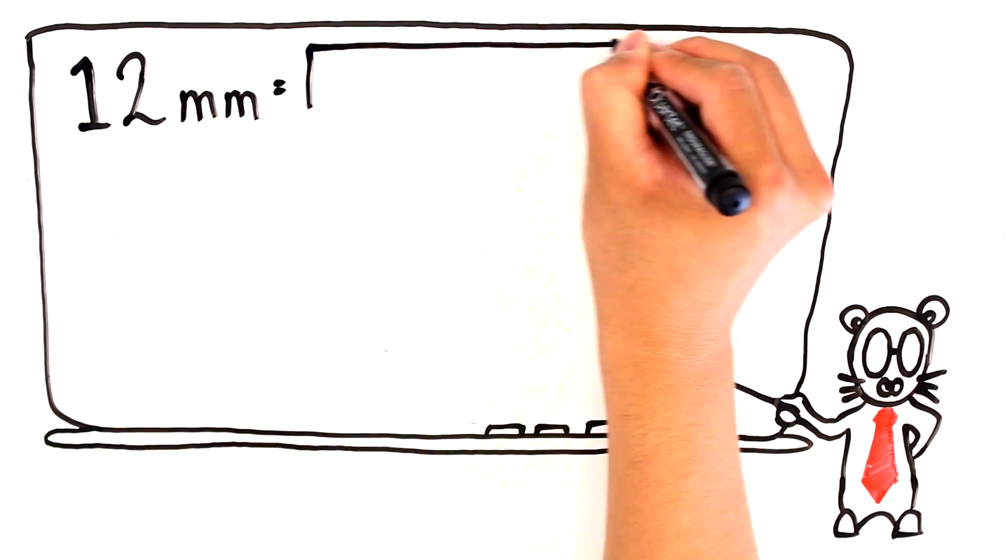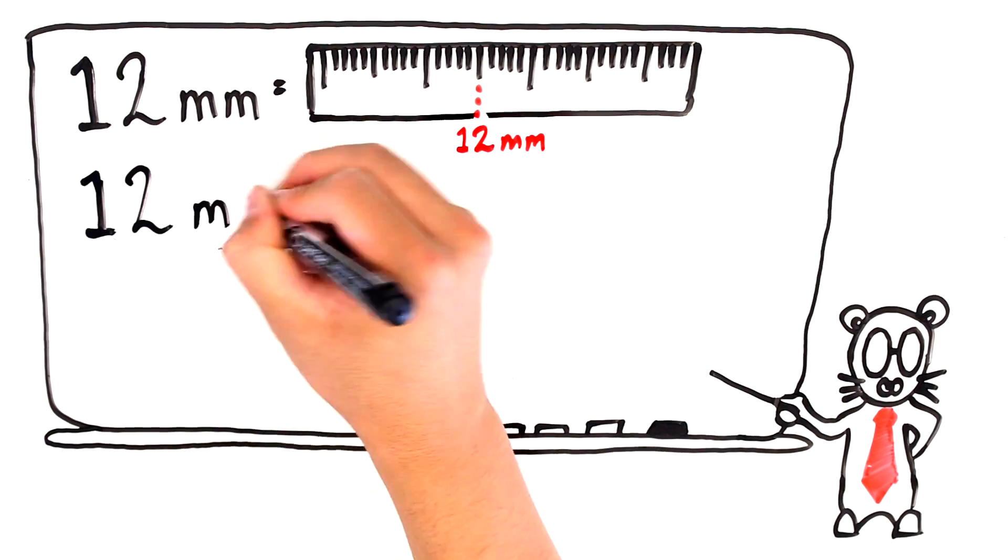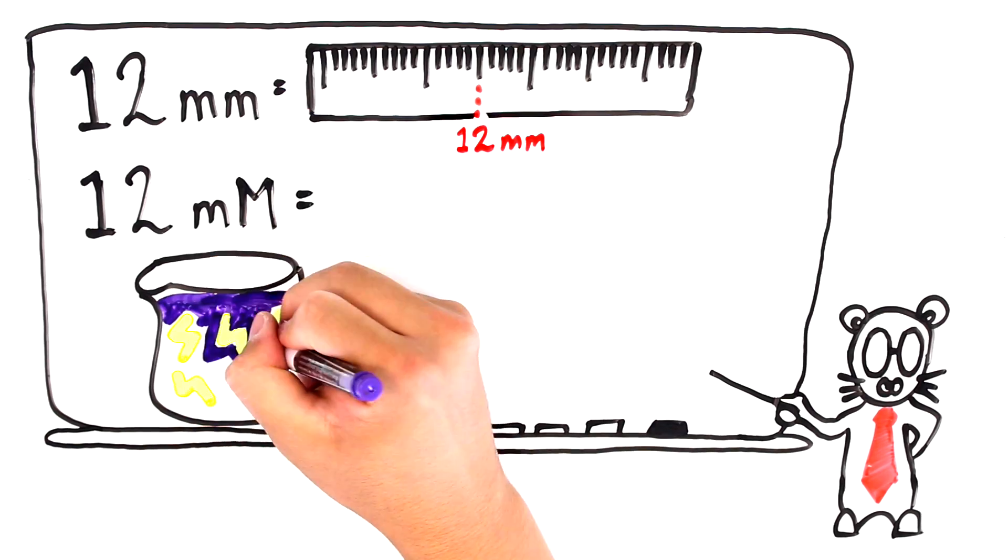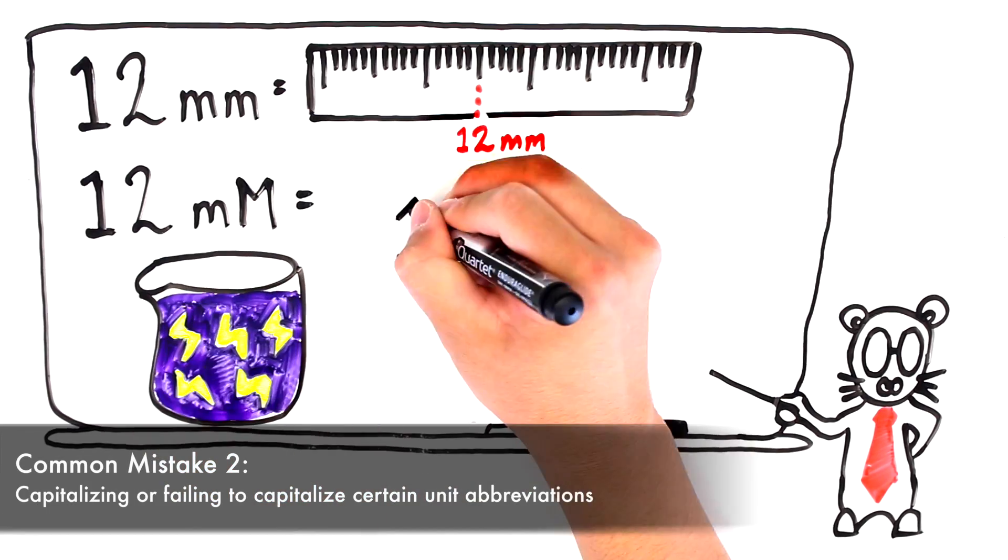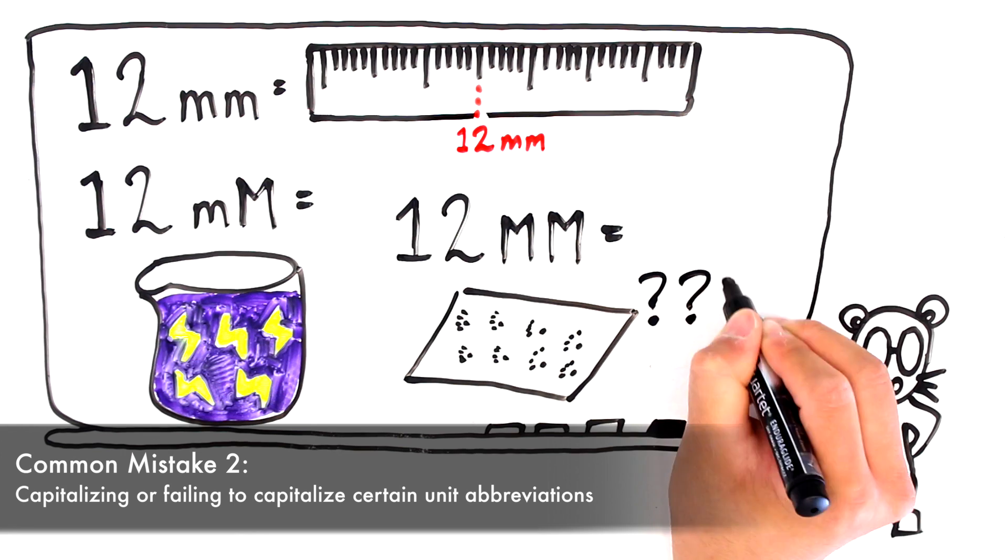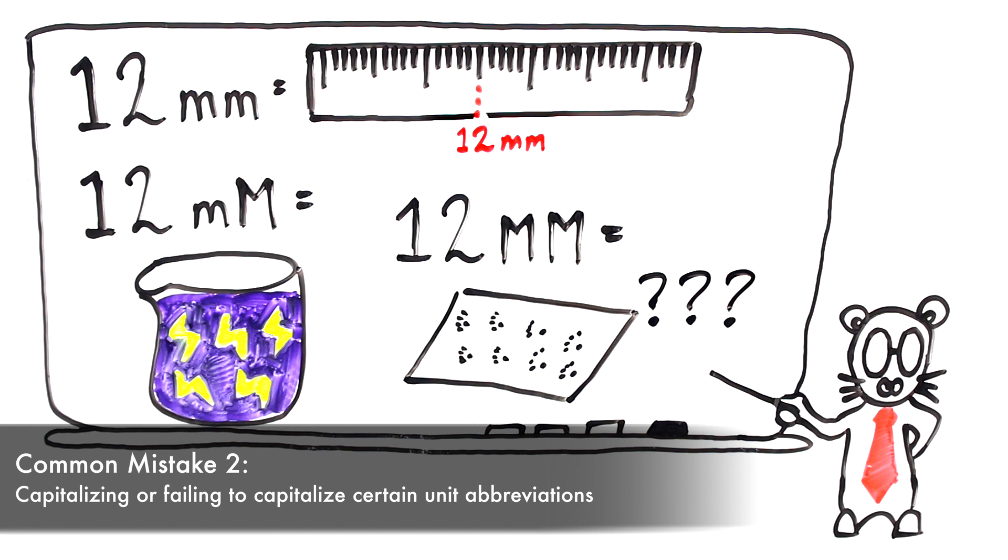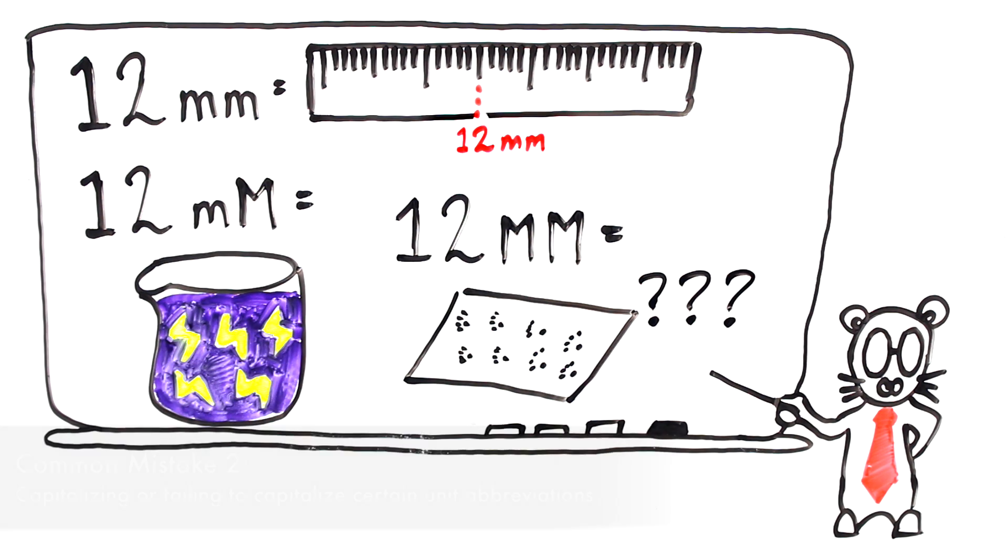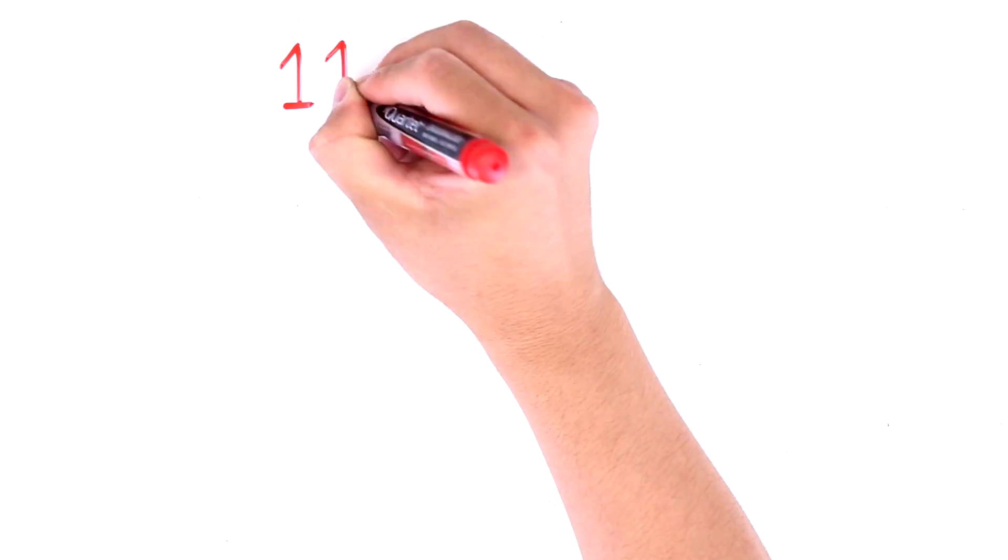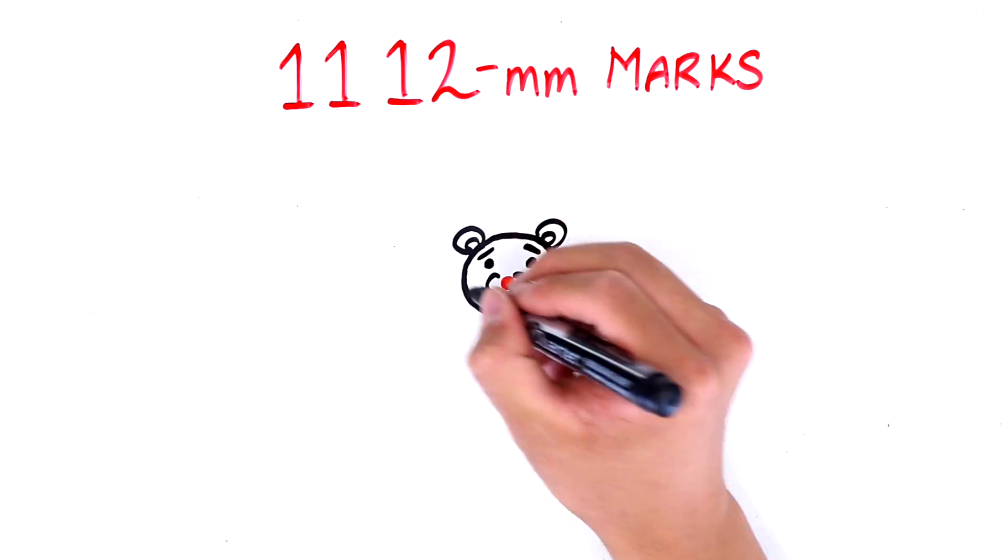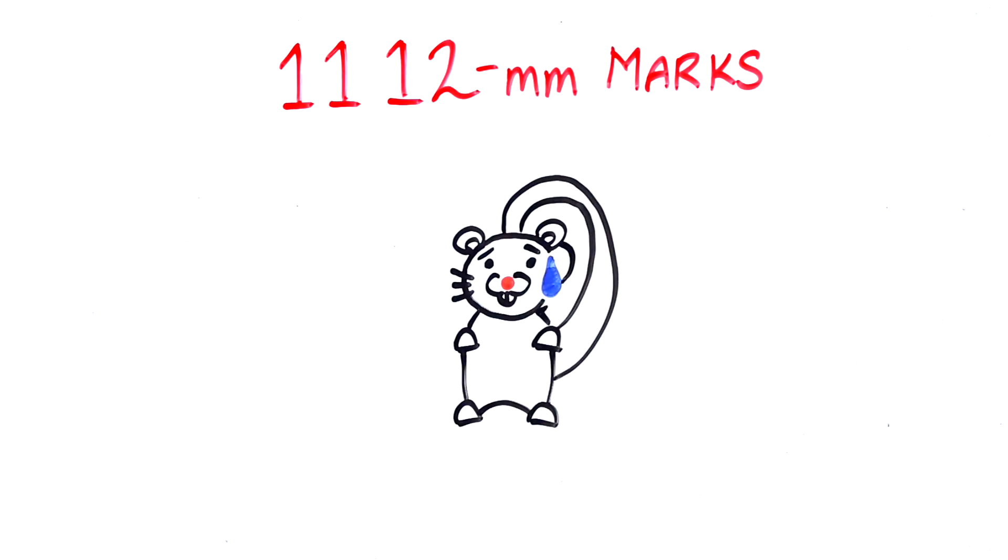Grammar Squirrel and her friends then have another flashback, and realize that their teacher mentioned earlier that one of the most common mistakes is to capitalize, or fail to capitalize, certain unit abbreviations. Grammar Squirrel is still sweating that something is wrong with what seems to be the correct version though.